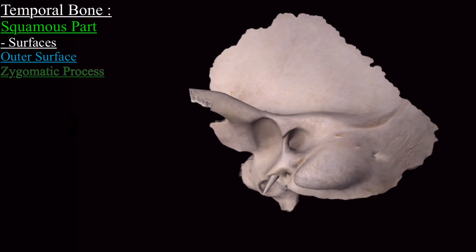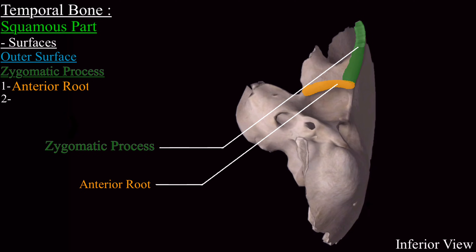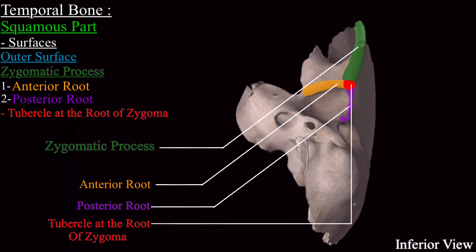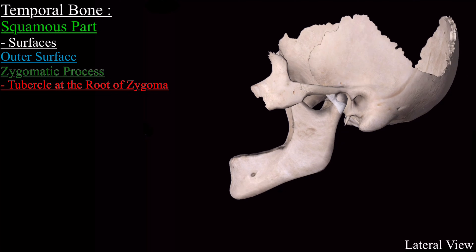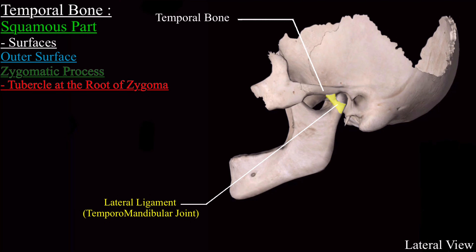Looking at the inferior view of the zygomatic process, it splits into two roots: the anterior root and the posterior root. At the junction of the anterior and posterior root is a tubercle called the tubercle at the root of the zygoma. This tubercle provides attachment to the lateral ligament of the temporomandibular joint, which attaches the temporal bone to the mandible bone.